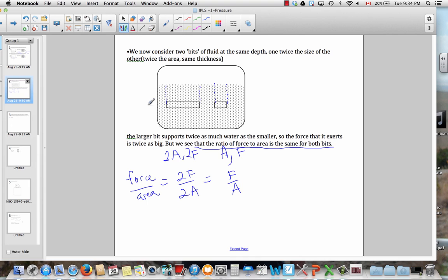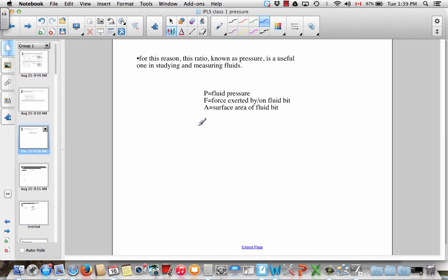And consequently, it'll actually be the same for those two bits because they're at the same depth. Any bit at that depth will have the same ratio of force to area. This ratio is, of course, the pressure. So every bit of fluid here is under pressure. It's the same pressure, equal pressure at equal depth. Okay, so pressure is a force distributed over an area then.